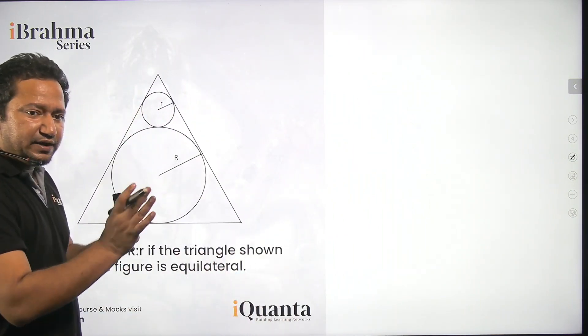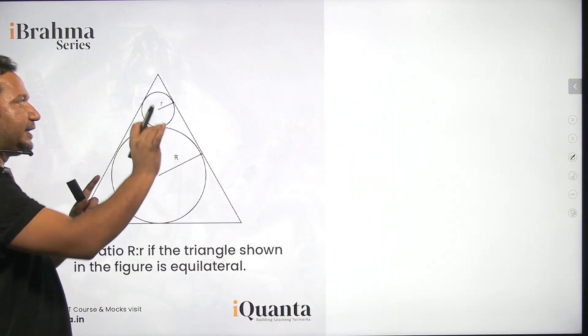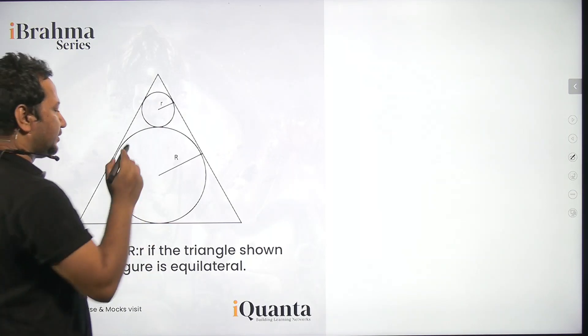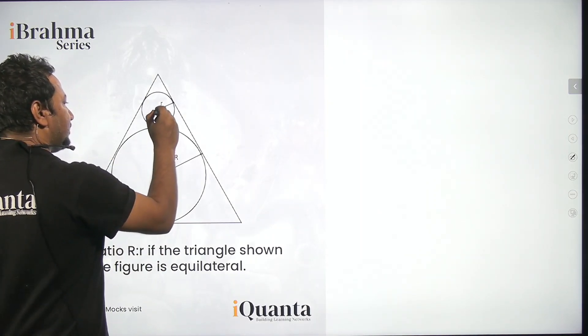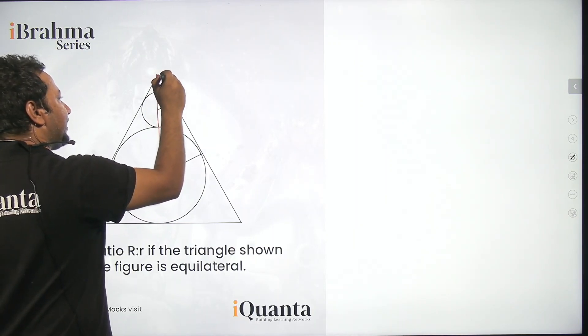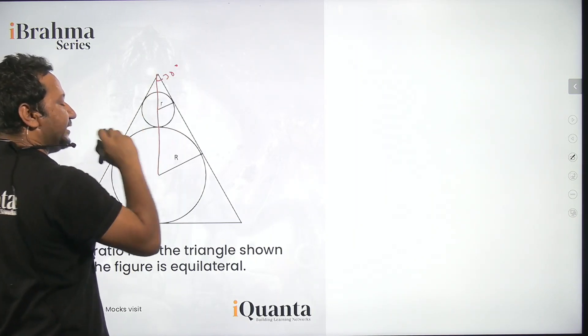If the triangle is equilateral then all the angles at the vertices are 60 degrees each. Now if I join the center of these two circles and then the vertex I'll get this as equal to 30 degrees.